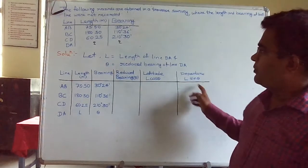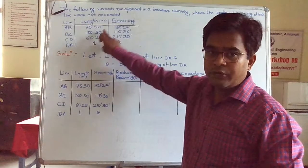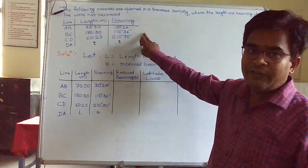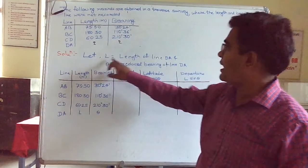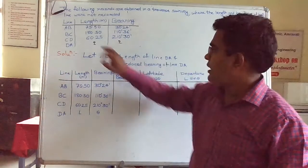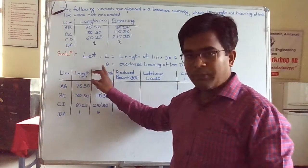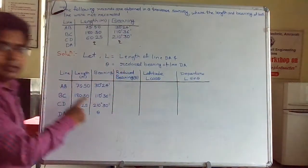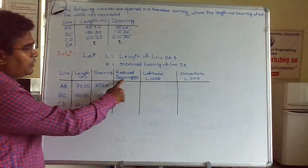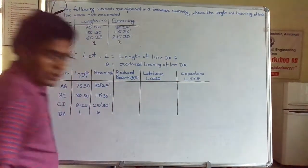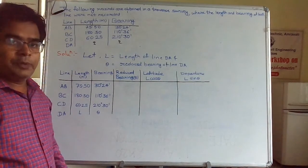In the first step of the solution, the length and bearing of the first three lines are given, and the last line data is missing. We assume L to be the length of line DA and theta to be the reduced bearing of line DA. Then we prepare a table with columns: line, length, bearing, reduced bearing, theta, latitude, and departure. To compute latitude and departure, we need the reduced bearing.